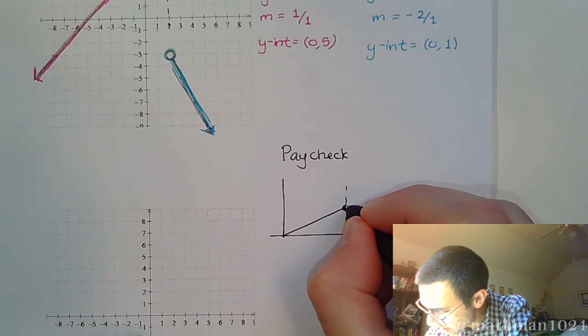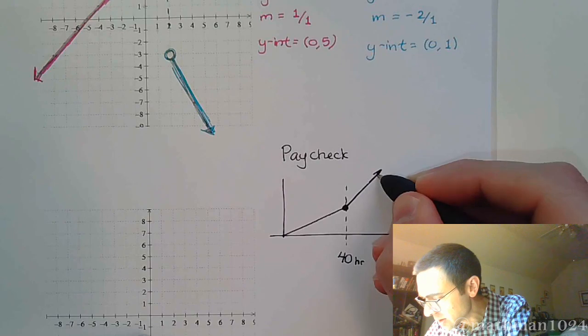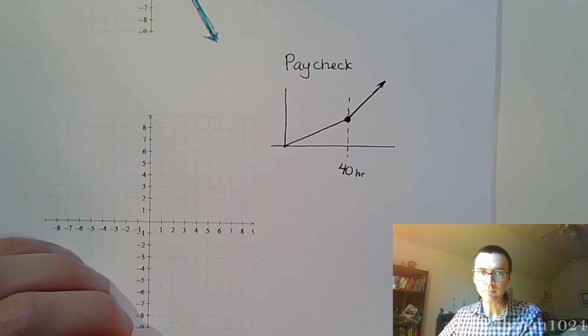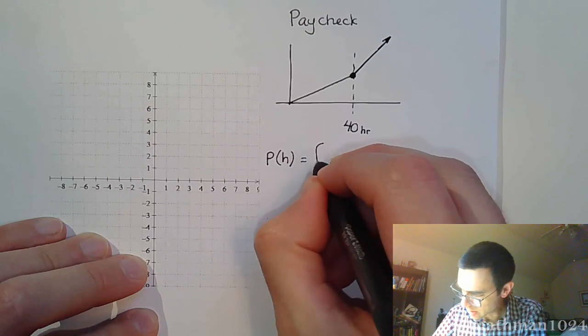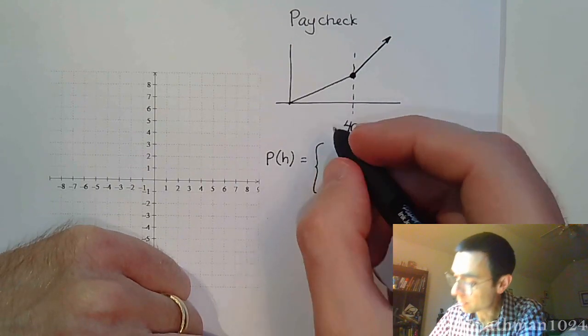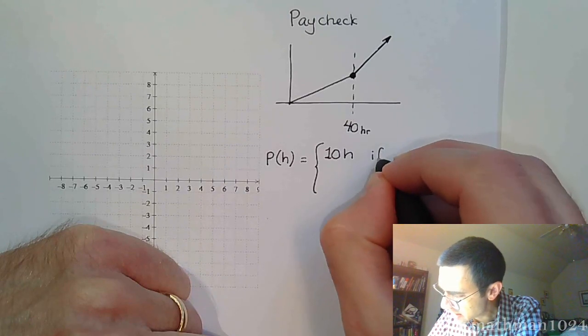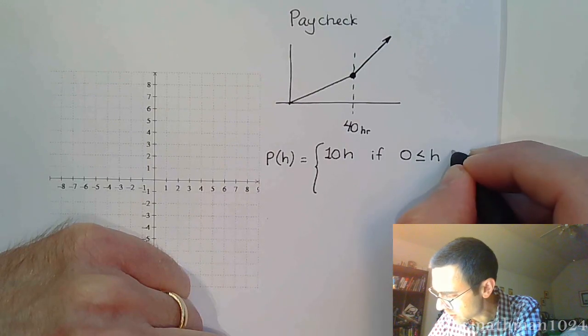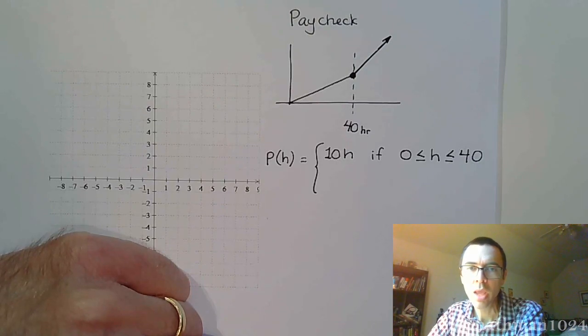This guy stops right here, but then it picks up and starts going at a steeper rate. That's a piecewise defined function. You can even write this out. It looks something like this. Your pay, based on the hours that you work, just to make the math easier for us, let's say you get paid $10 an hour. So if you take the number of hours times 10, this is going to work as long as you are working between 0 and 40 hours.